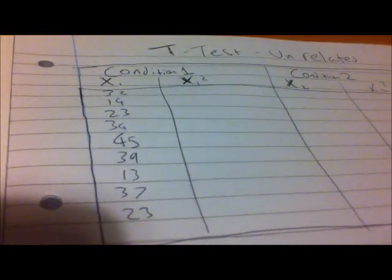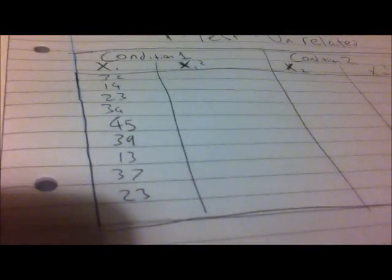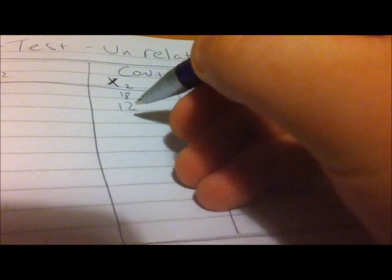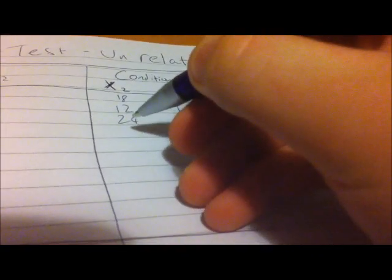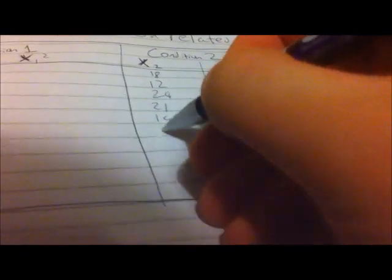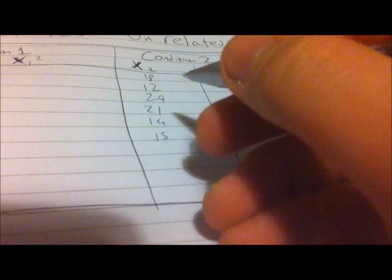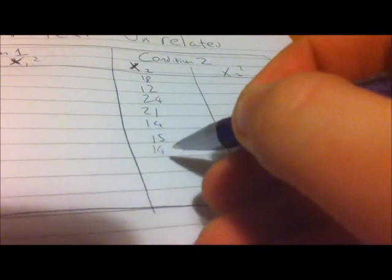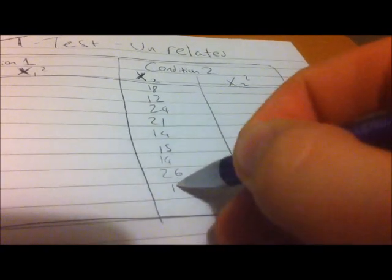So the values are 32, 14, 23, 34 - if you want to go through this as well, I'll hold the camera like that - so we've got 32, 14, 23, 34, 34, 45, 39, 39, 13, 37, 23, 23. Now by my record I've missed out one of the fucking bastards. Ah, I'm missing out 23. I'll push it in on that.